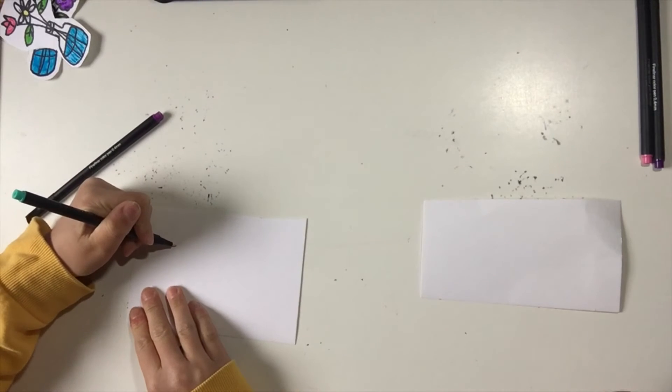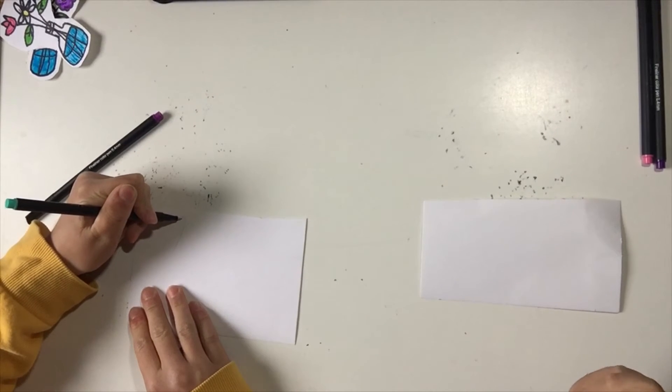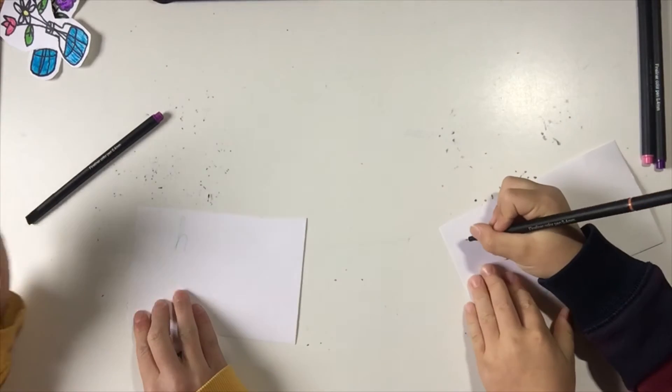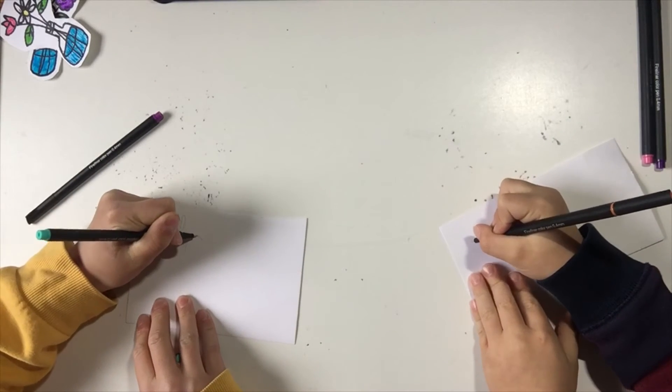So I'm going to do an H that goes around loopy curve and out like that, and then I'm just going to finish writing Happy.